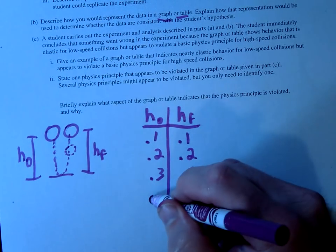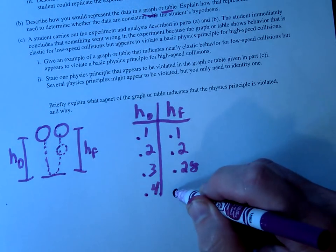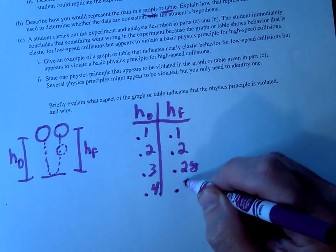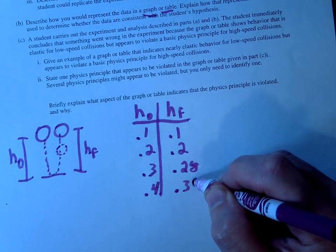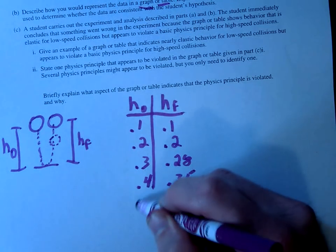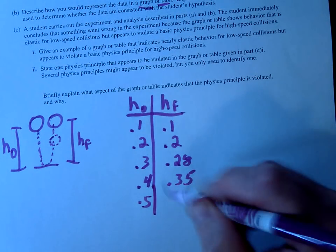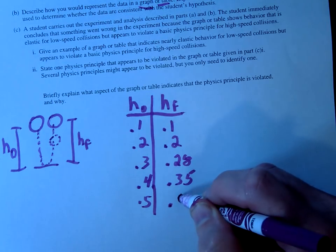And maybe you do 40 centimeters, and now you get a height of 0.35, and so forth. Let's just do one more, 0.5. Okay, again, hopefully you get the point. Let's say you're getting 0.4 now.